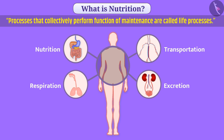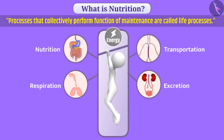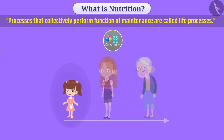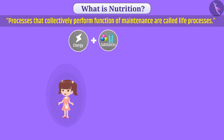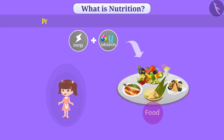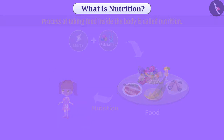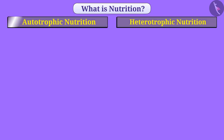Organisms need energy to perform various tasks and for necessary processes that maintain life. Along with this, various substances are also needed for growth of the body. Living organisms get energy and substances from food. The process of taking food inside the body is called nutrition. On the basis of the method of eating food, there are two types of nutrition: autotrophic nutrition and heterotrophic nutrition.